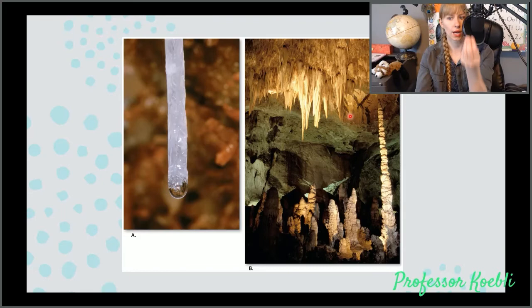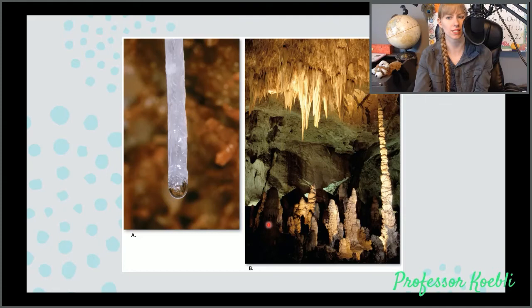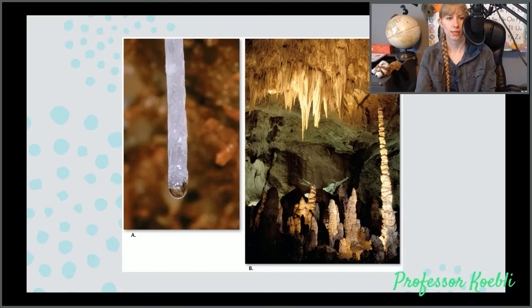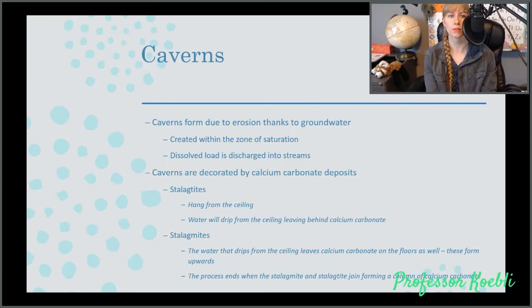Stalactites up here hang from the ceiling. Water will drip down, leaving behind calcium carbonate. Stalagmites on the bottom are the waters that drip from the ceiling, leaving calcium carbonate deposits on the floors. Eventually they do meet in the middle, essentially just causing a pillar to form. It's really cool to see and often quite pretty, but these are not something you want to fall on you or to fall on.